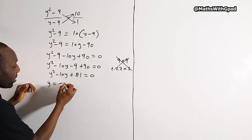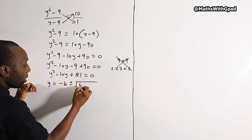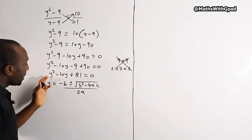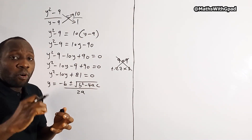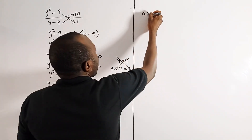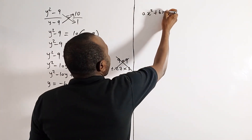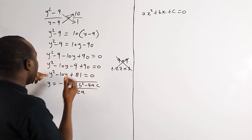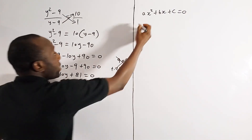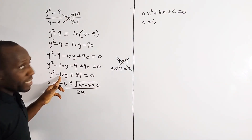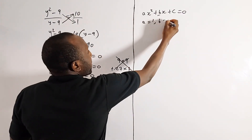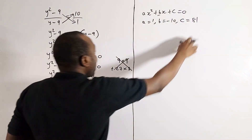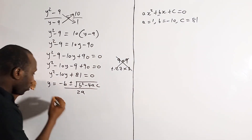The quadratic formula is: y equals negative b plus or minus the square root of b squared minus 4ac, all divided by 2a. Comparing our equation with the general form ax squared plus bx plus c equals 0, we identify: a is the coefficient of the leading term, which is 1; b is negative 10; and c is the constant term, 81.